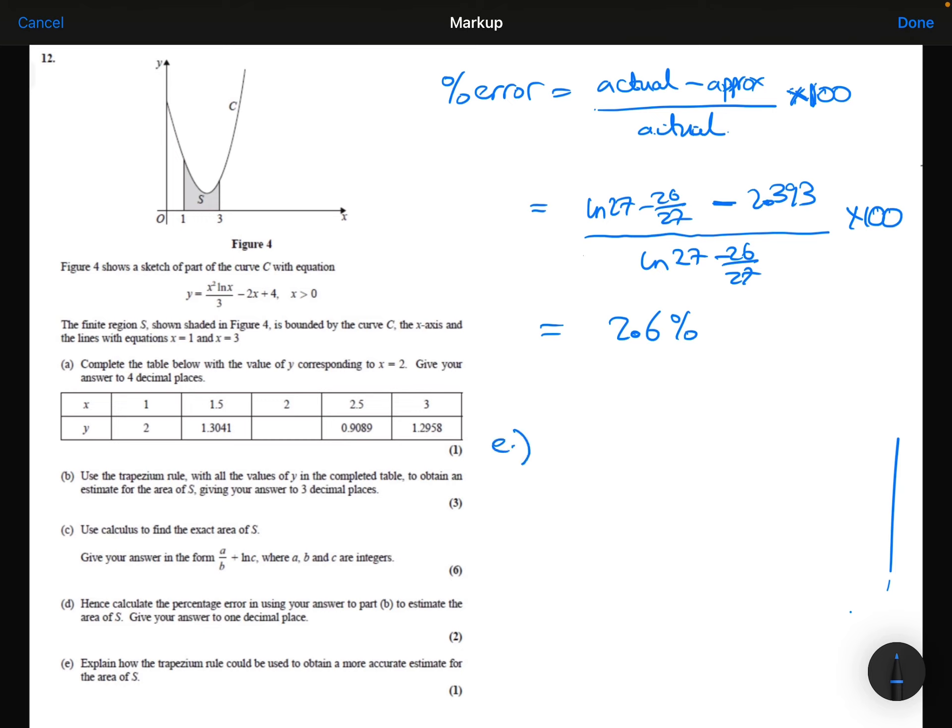And then finally, Part E: Explain how the trapezium rule could be used to obtain a more accurate estimate for the area of S. Well, we could use more strips. By using more strips, that would reduce the error. It would reduce the difference between the curve and the tops of our trapeziums, so it would increase the accuracy.